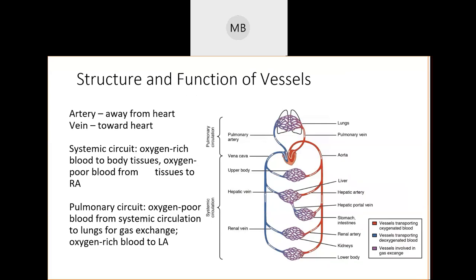Some basic definitions: vessels carrying blood away from the heart are called arteries. Any vessel carrying blood toward the heart is called a vein. Oxygenated blood is colored red, deoxygenated blood is colored blue. The small blood vessels where gas and nutrient exchange happen with your cells are colored purple. Capillaries are the smallest blood vessels — they exchange nutrients directly with cells from your blood supply. This is where blood becomes deoxygenated.